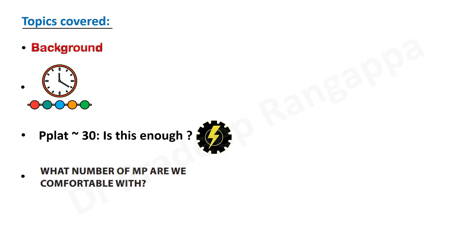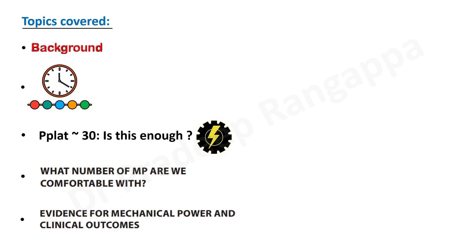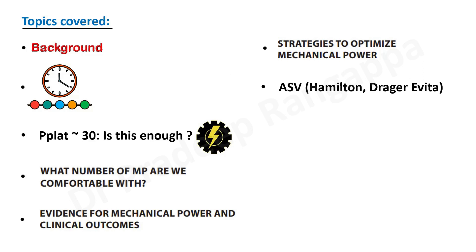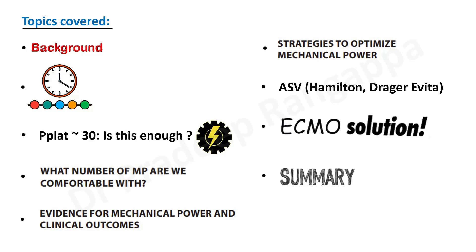When we talk about mechanical power, what is the number we need to have in mind? What number are we comfortable with? Briefly on current evidence — most importantly, is this relevant from a practical standpoint and has there been clinical application? Then we look at strategies to optimize mechanical power, adaptive support ventilation, whether ECMO is a solution if all maneuvers fail, and a summary.